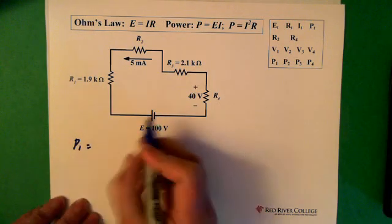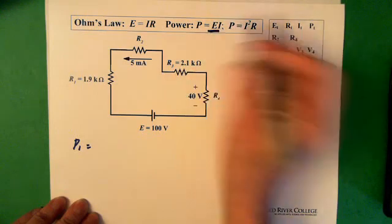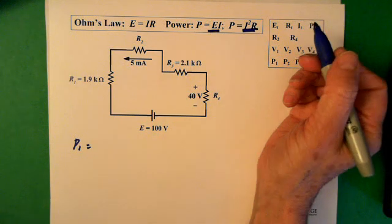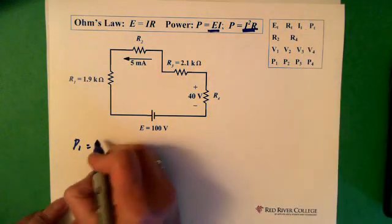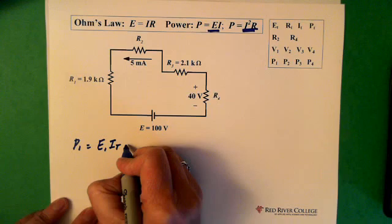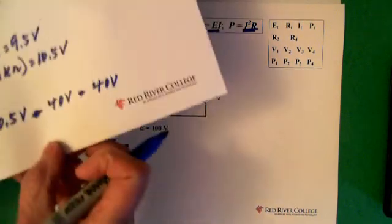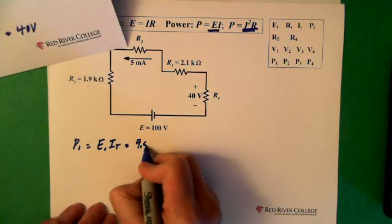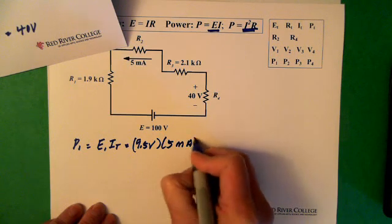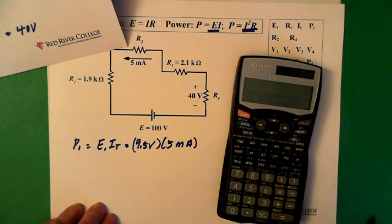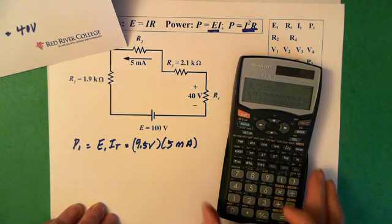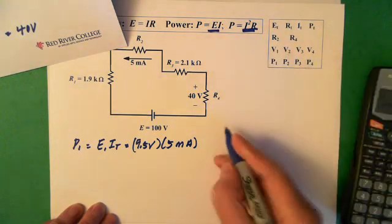So power 1, I'm just going to use voltage times current. You can use this one if you want, but since we have both voltage and power across all the resistors, we might as well just use that because it's simpler. So that would be E1 times our total current, and E1 we know is 9.5 volts. And that's multiplied by our 5 milliamps. We have 9.5 times our current, 47.5 milliwatts.